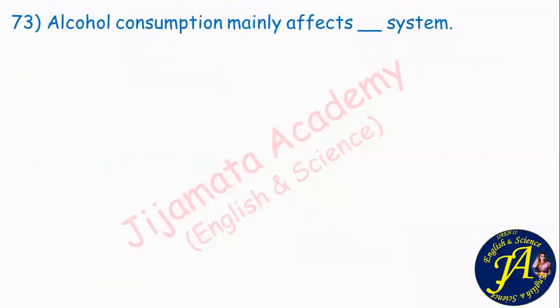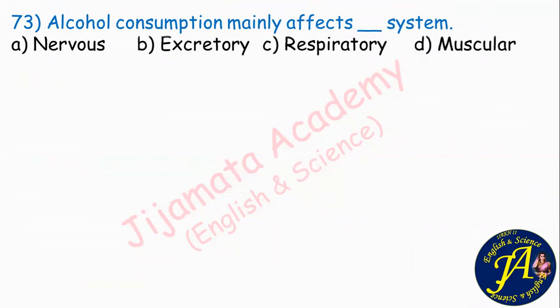Alcohol consumption mainly affects dash system. Options are nervous, excretory, respiratory, muscular. Correct answer is option A: nervous system.